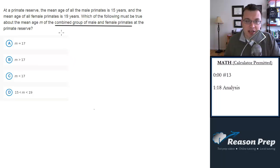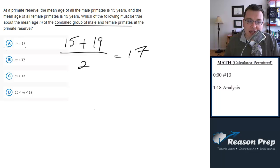What you don't want to do is simply say, well, the mean of the males is 15, and the mean of the females is 19, so I'll find the mean of them by adding them, dividing by 2, and getting 17, and then I'll go with A. You don't want to do that,